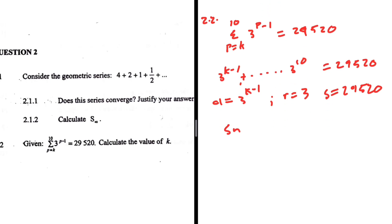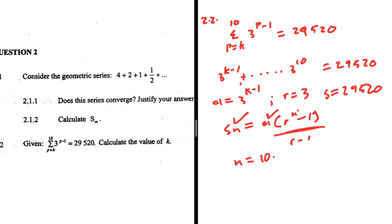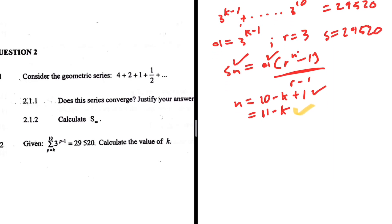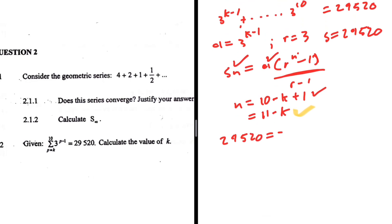The sum of n terms formula is Sn equals a multiplied by r to the n minus 1, all divided by r minus 1. We need to find n: n equals 10 minus k plus 1, which simplifies to 11 minus k. That is the number of terms. Substituting: 29520 equals a, which is 3 to the power k minus 1, multiplied by r to the power n, where r is 3 and n is 11 minus k, minus 1.